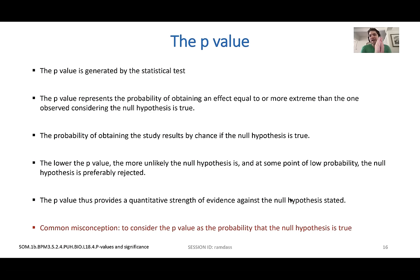If you want to say with 95% confidence that a situation happens under these circumstances, but your P value is greater than 0.05, then you can't say necessarily that's the case. You're saying it also happens by chance — it's not necessarily the circumstances you were looking at.